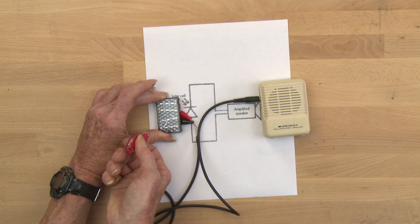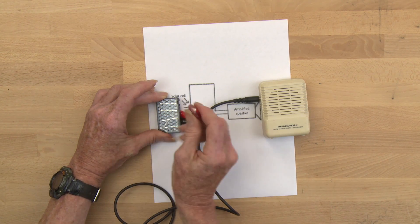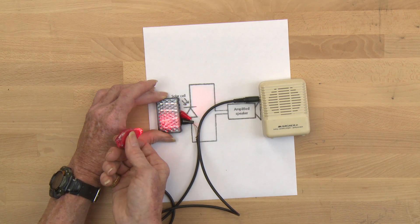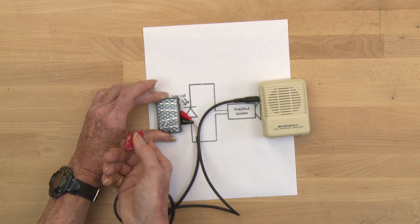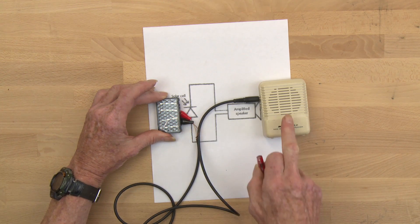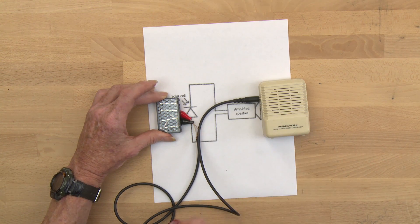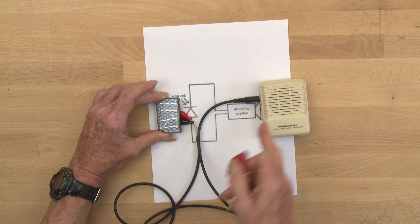It also has another mode where it blinks, and each time the light hits the solar cell, it makes an electrical current that pushes that speaker out, and you can hear it as a click. Light turned into sound.